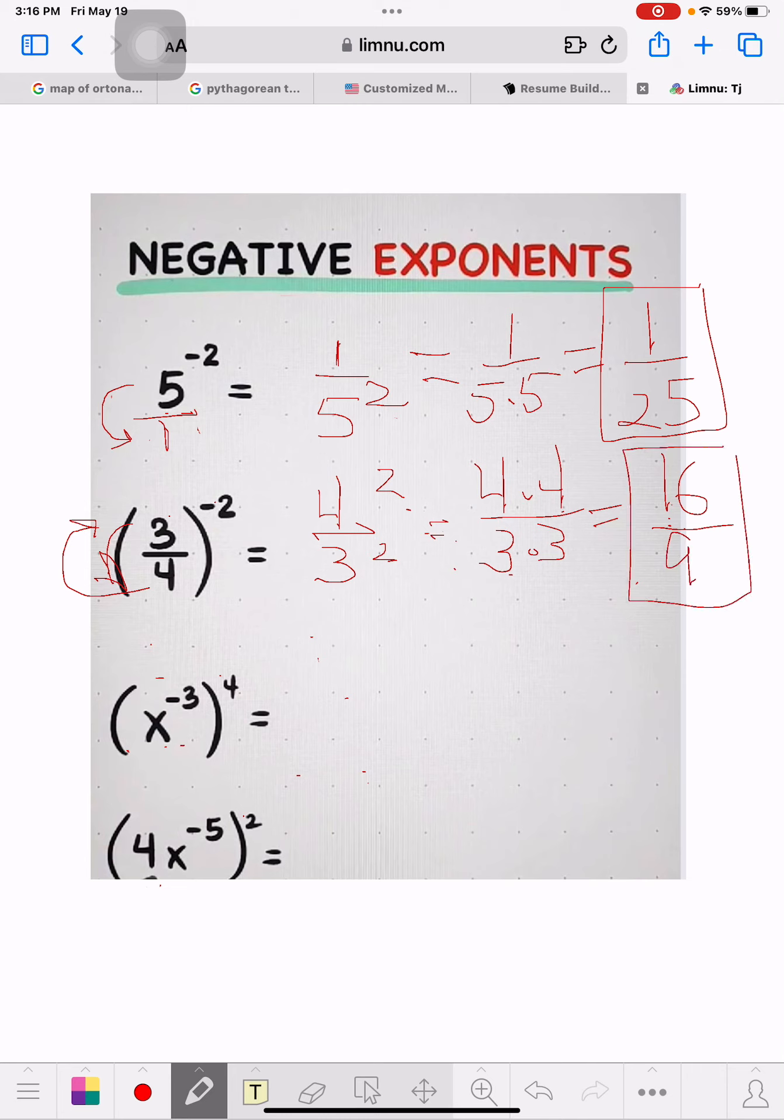Now, the next one. It's brackets x to the negative cube brackets to the fourth power. Let's see how you do this. The way this always worked is the 4 was in here and times. So it's times this.